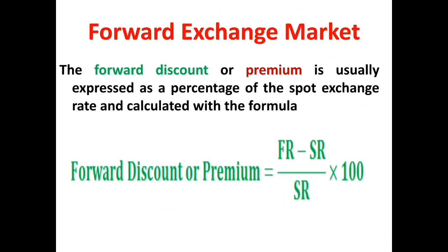The forward premium as well as discount are usually expressed as a percentage of the spot exchange rate, and it can be calculated as: Forward Discount or Premium = (FR − SR) ÷ SR × 100, where FR means the forward exchange rate and SR means the spot exchange rate.